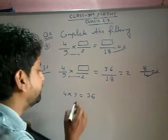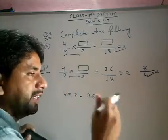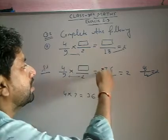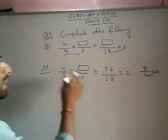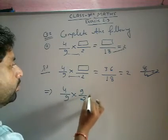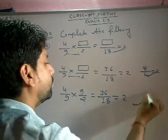36. So 4 upon 9 into 9 upon 2 equals to 36 upon 18 equals to 2. Clear?